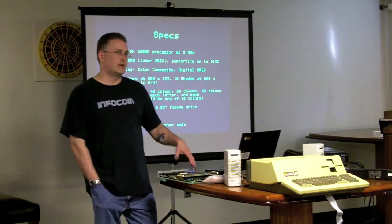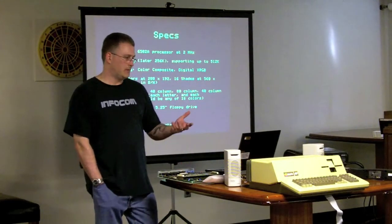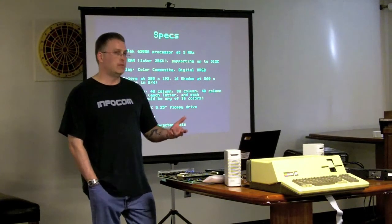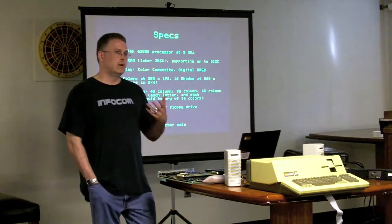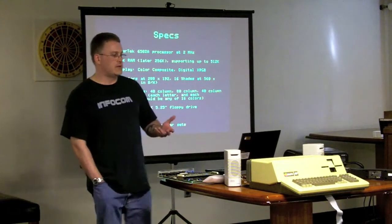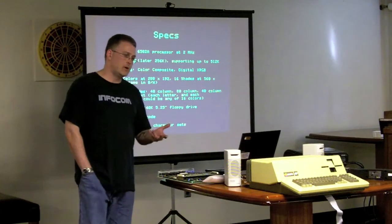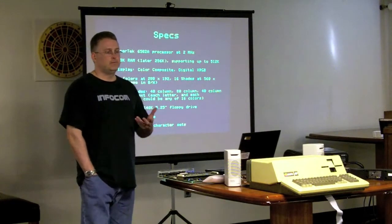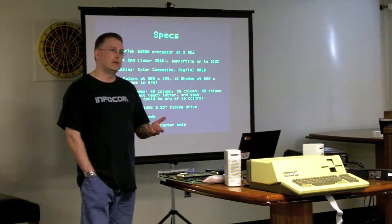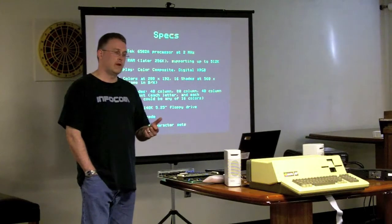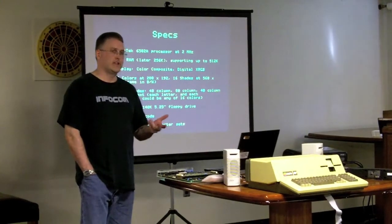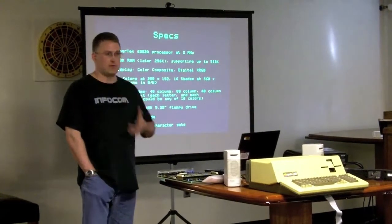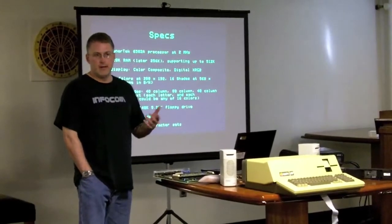It had composite output like the Apple II, but it also came with RGB — a digital XRGB — which means it won't work as-is with a IIgs monitor. At the time, there weren't any monitors out that would support the digital XRGB, which is one of the things people complained about. They said, 'We have all these great graphics capabilities but we don't have any way to access them.'